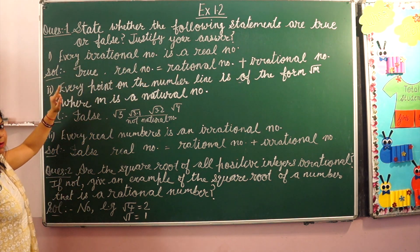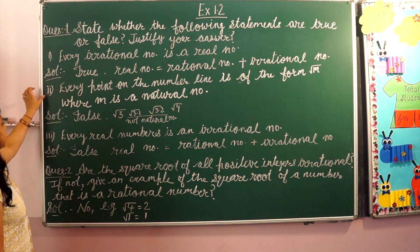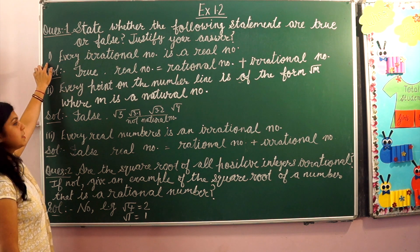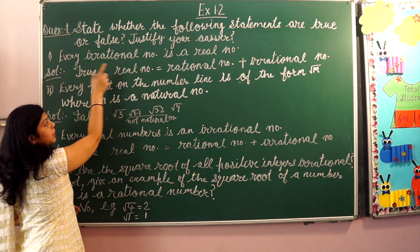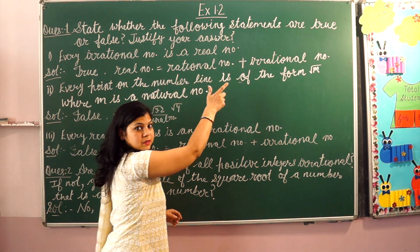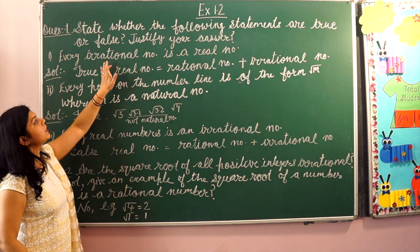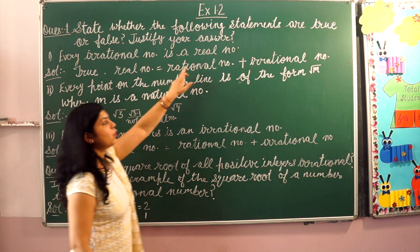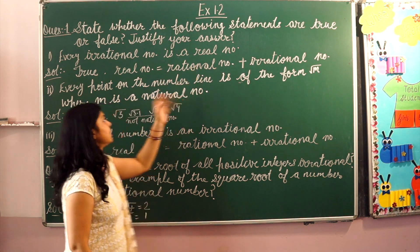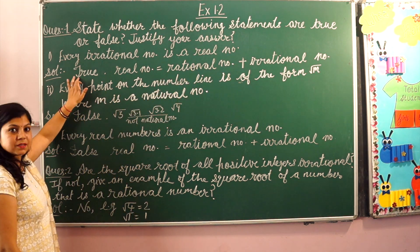Question number 1 has 3 parts: first, second and third. Our first part is: every irrational number is a real number. Yes. This statement is true.